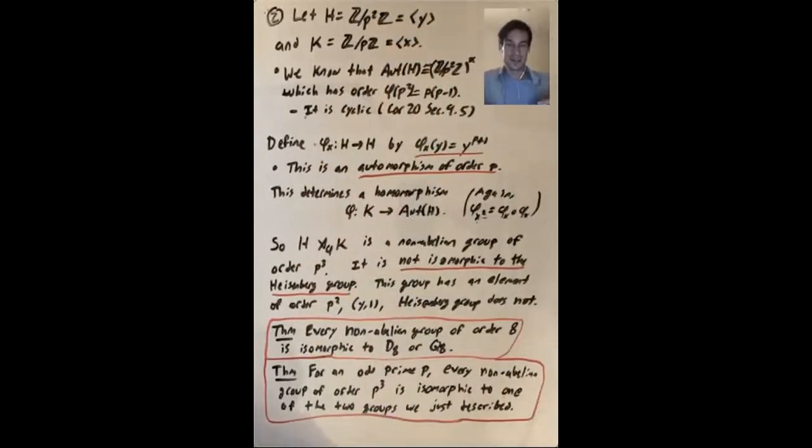And every non-abelian group of order 8 is isomorphic to either D8 or Q8.